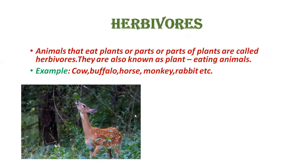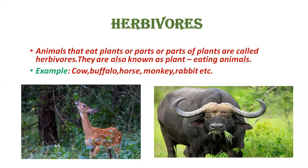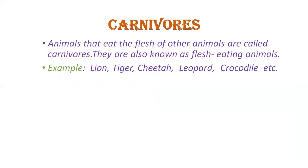The mouth part of these animals has sharp teeth in front, because sharp teeth jo hota hai, woh cut karne ke kaam pe aati hai. Herbivore jo hota hai, woh plant cut karti hai. Toh inke aage ke mouth part mein jo teeth hote hai, woh sharp hote hai. And back part jo hota hai, unka mouth ka, woh flat, broad and strong teeth hote hai. Woh chew karte hai.